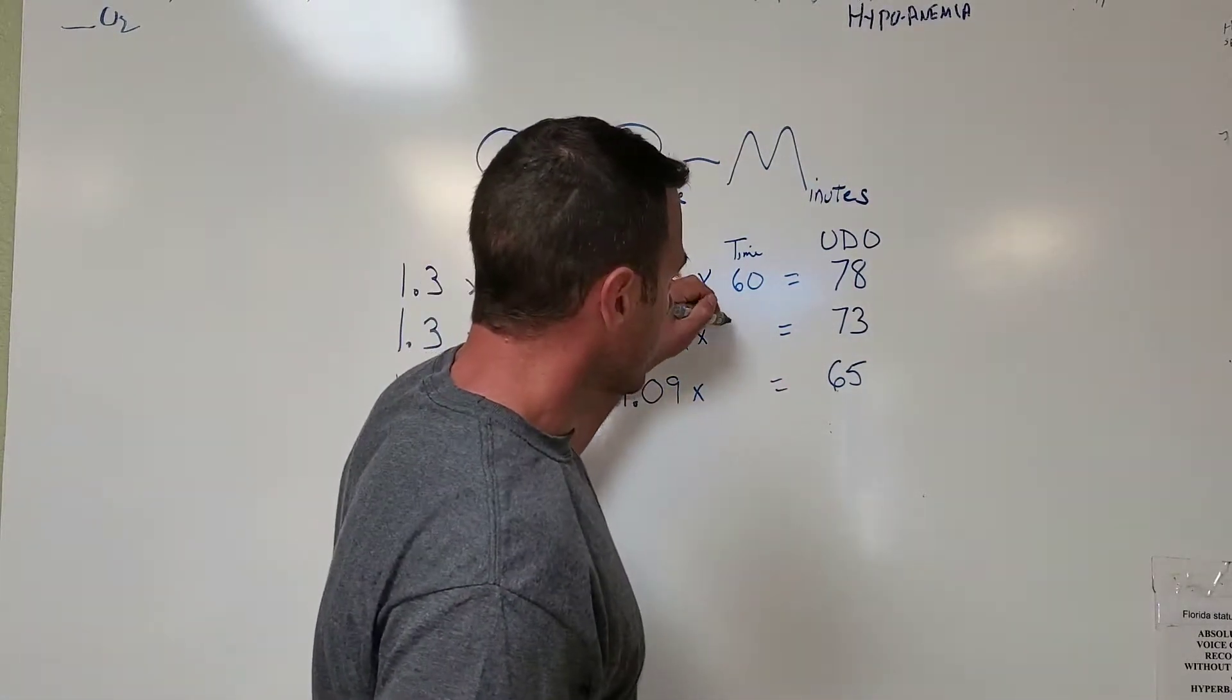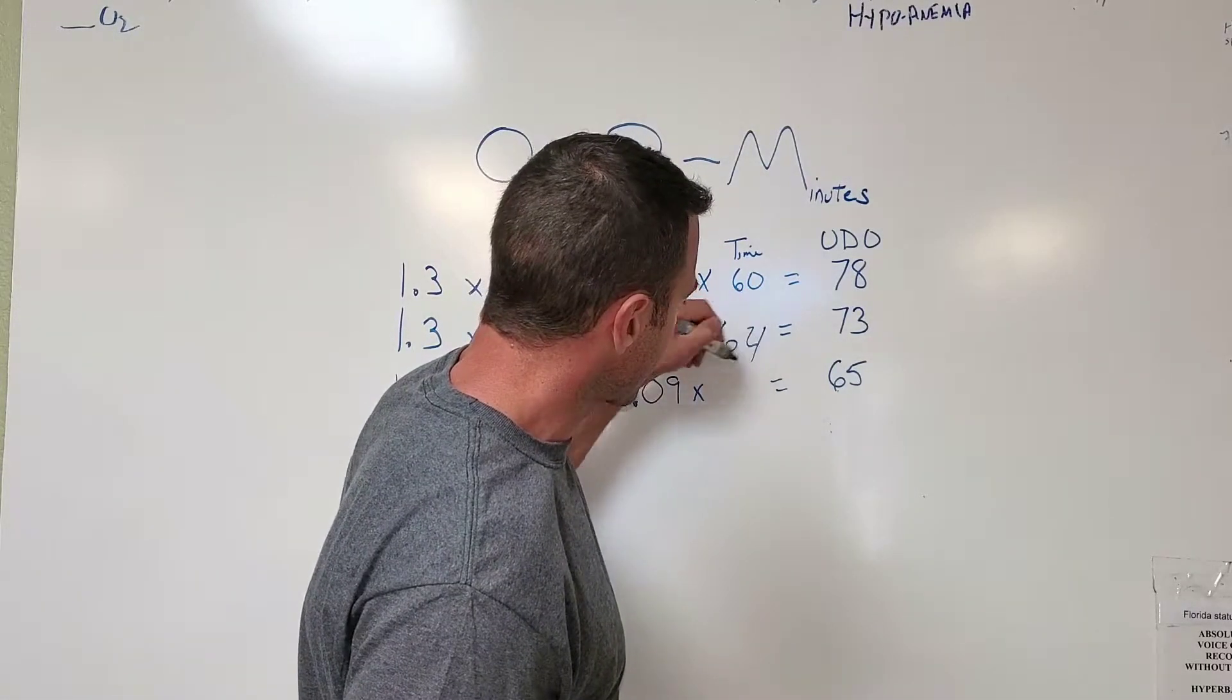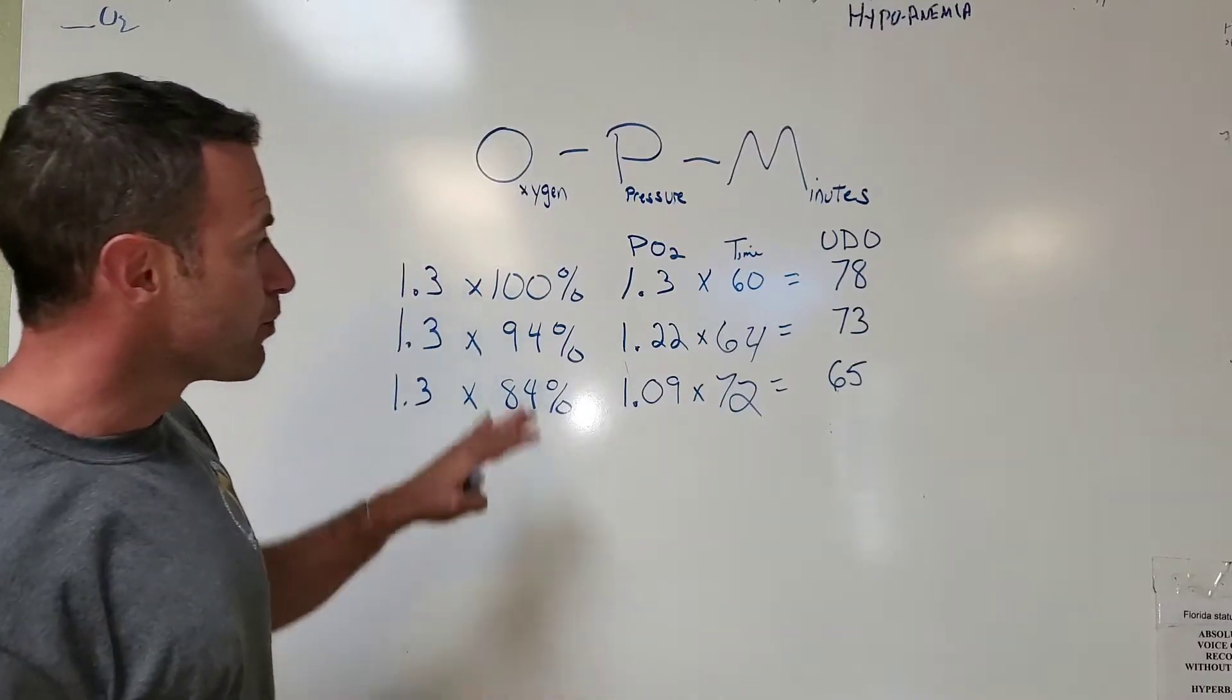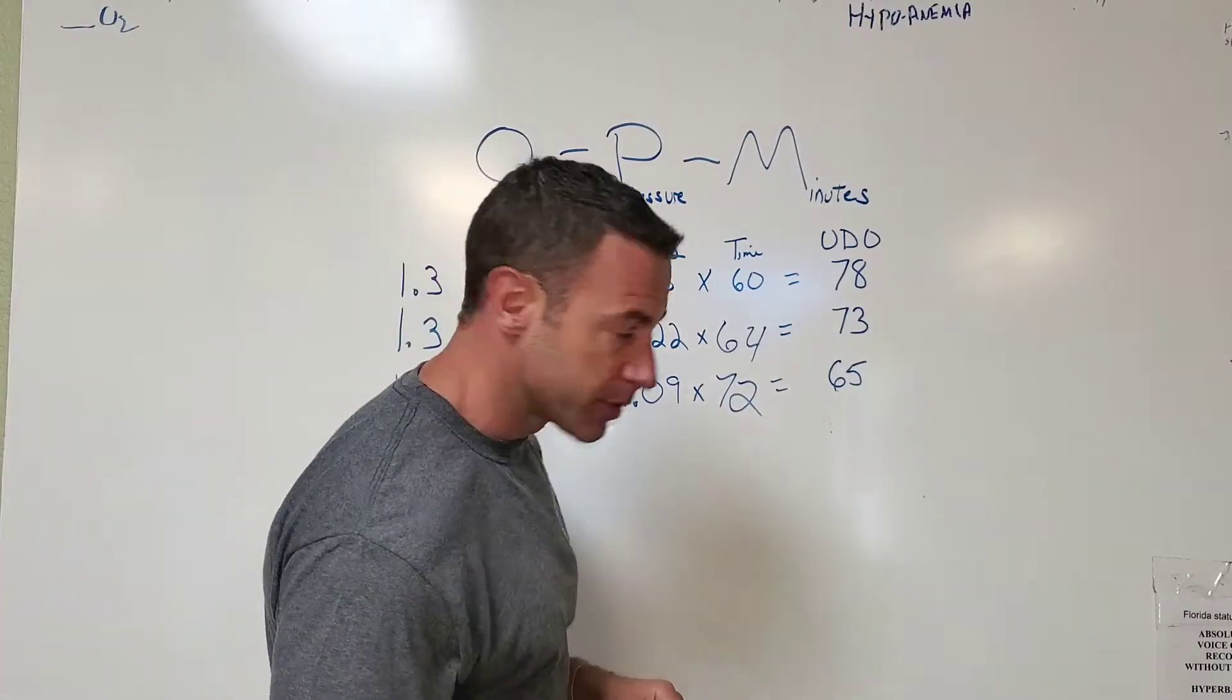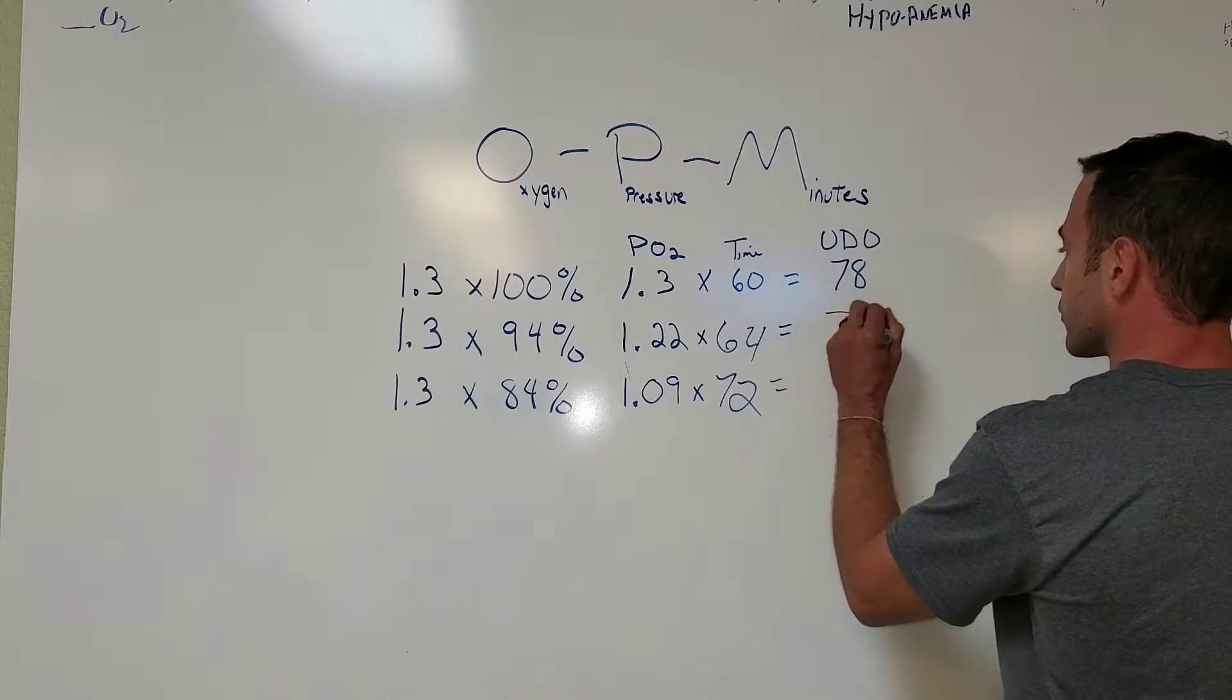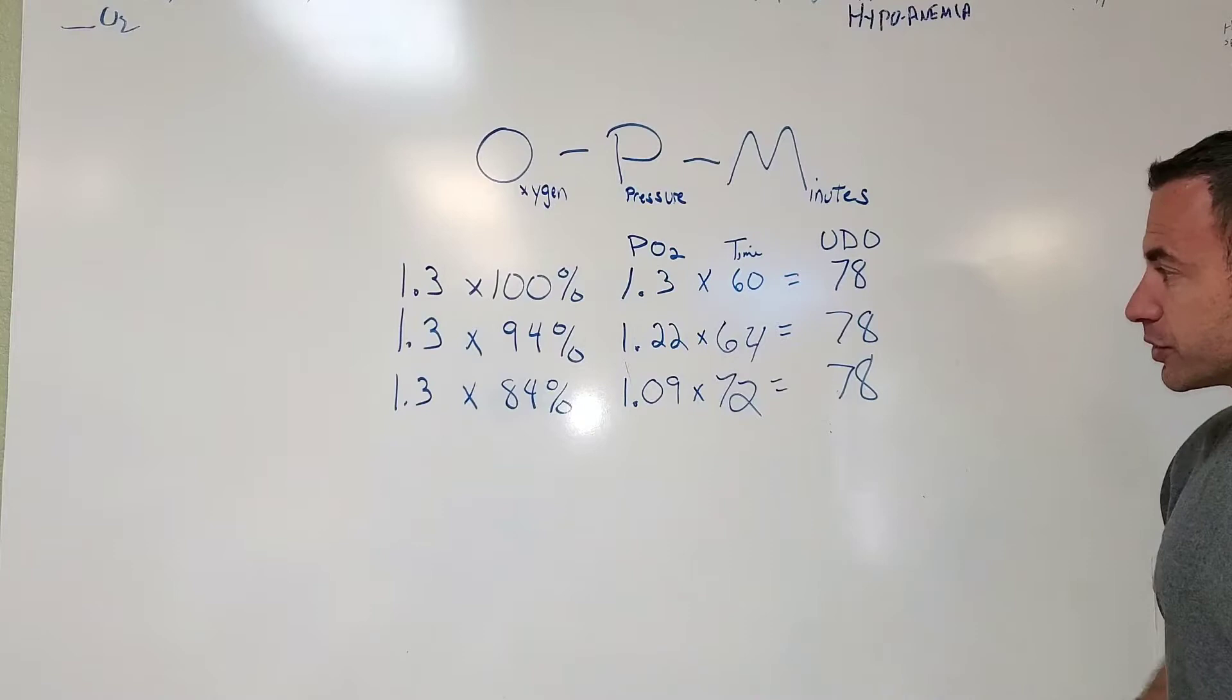Here we would be at about 64 minutes, and here it's about 72 minutes. So if we change the time and just add four minutes here, add about 12 minutes here, we would get the same unit of dosage.